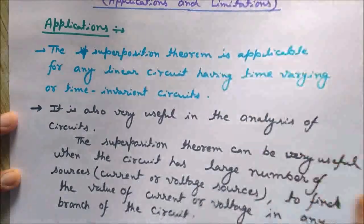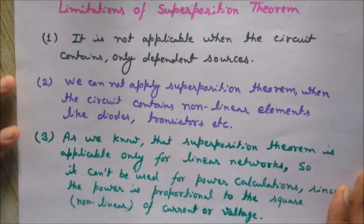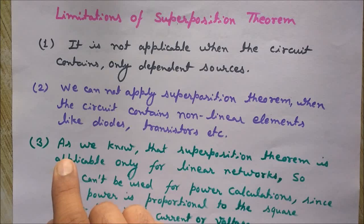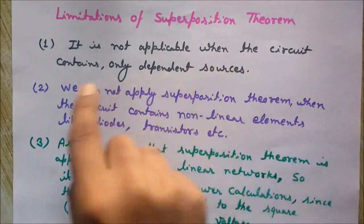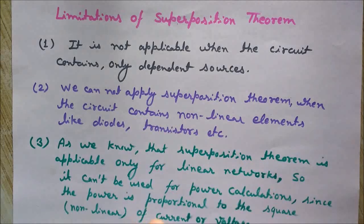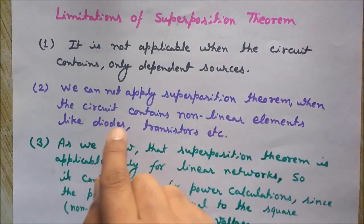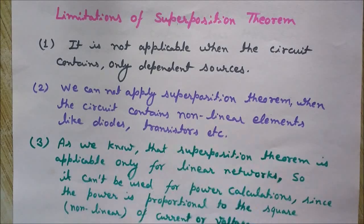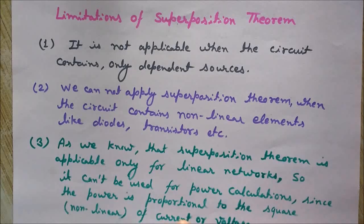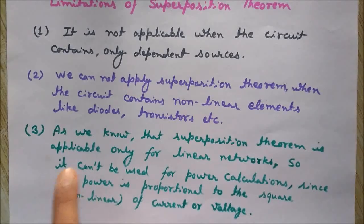Now let's see the limitations. The first limitation is that the superposition theorem is not applicable when the circuit contains only dependent sources — we need at least one independent source. The second limitation is we cannot apply the superposition theorem when the circuit contains non-linear elements like diodes and transistors, since it is applicable only to completely linear circuits.